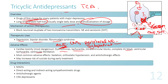Other common adverse effects of TCAs include sedation (from histamine receptor blockade), orthostatic hypotension (from alpha-1 adrenergic receptor blockade), and anti-muscarinic effects (from muscarinic receptor blockade). There is also a possibility of increased suicide risk during early treatment.